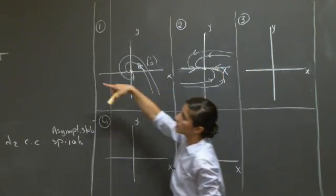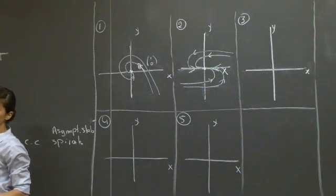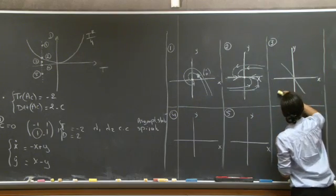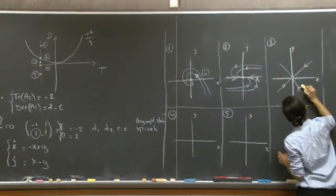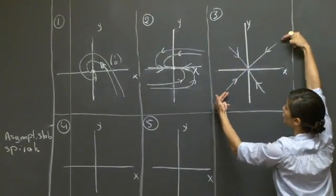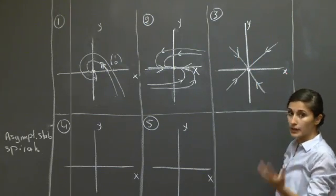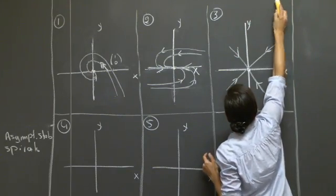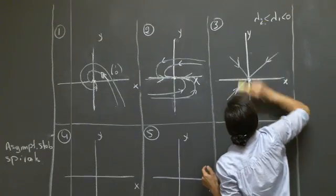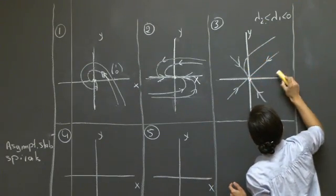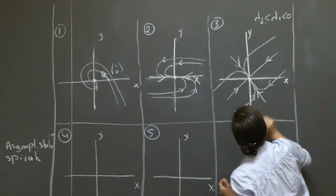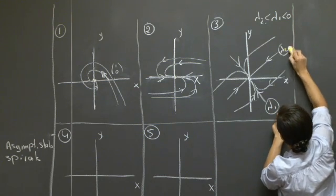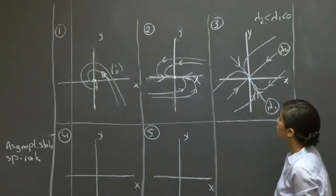Case 3: moving into the wedge area, we now have two real negative eigenvalues. The two eigenvectors define two rays, with trajectories directed toward the critical point along those rays. If lambda 1 is less than lambda 2, trajectories approach the origin and the trajectory corresponding to the eigenvalue closer to 0 dominates at large times. All arrows point toward the critical point, giving a stable node.